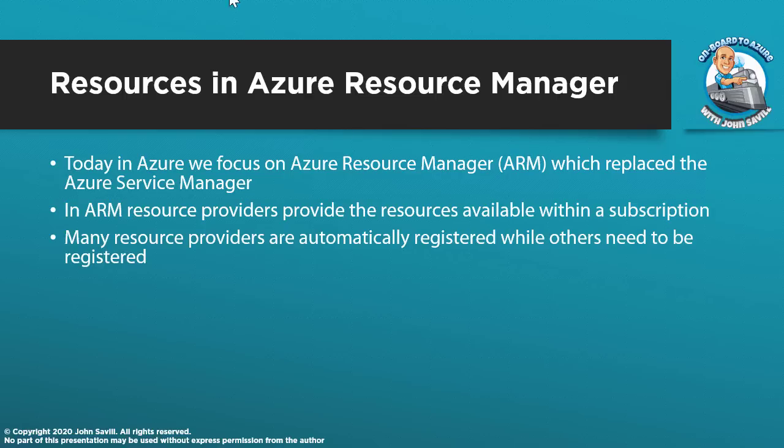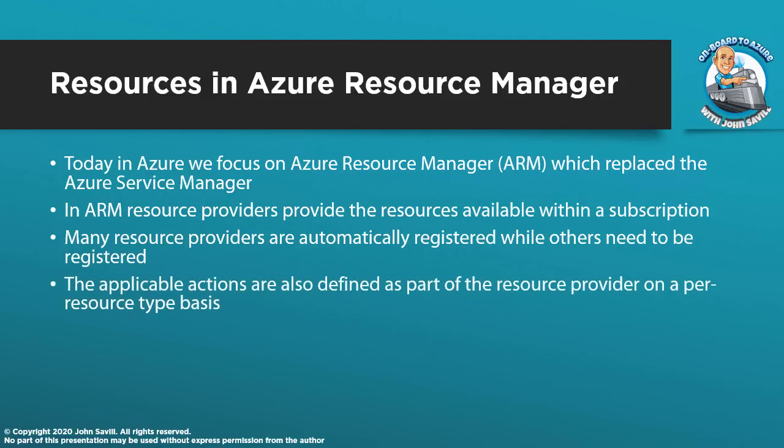Additionally, there are actions that I can use for different types of resource, and the resource provider defines those actions. Some types of action will work for any type of resource — for example, read, write, delete. They're very standard and work across different types. Others are very specific — for example, run command extension, which is very specific to a virtual machine and wouldn't apply to a storage account. But the resource provider describes all of those applicable actions for each type of resource.